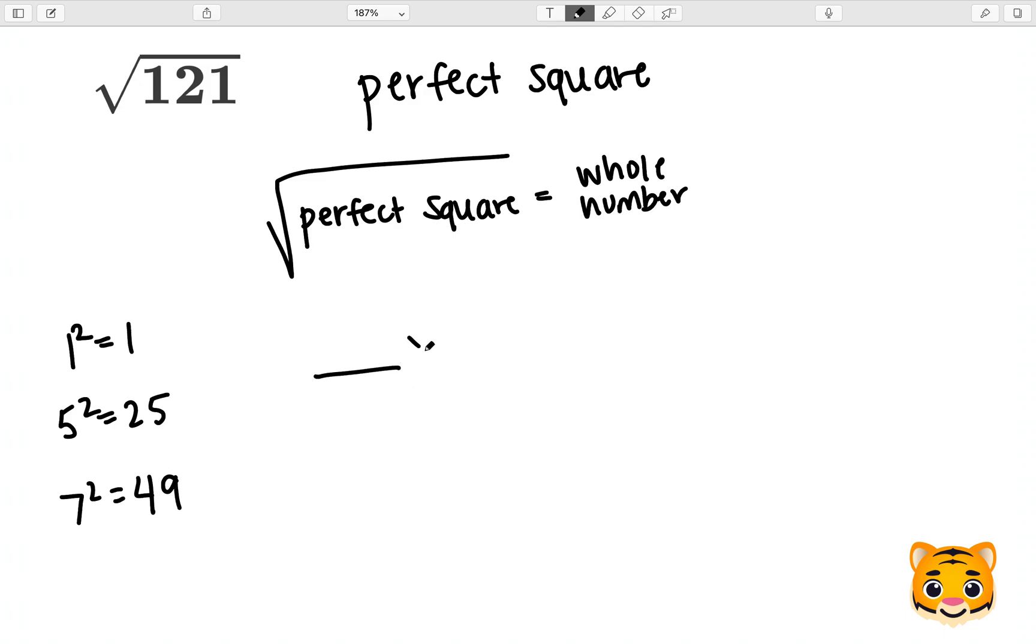We want to think about what times itself gives us 121 in order to find the square root of 121. If we do 11 times 11, we will obtain 121.